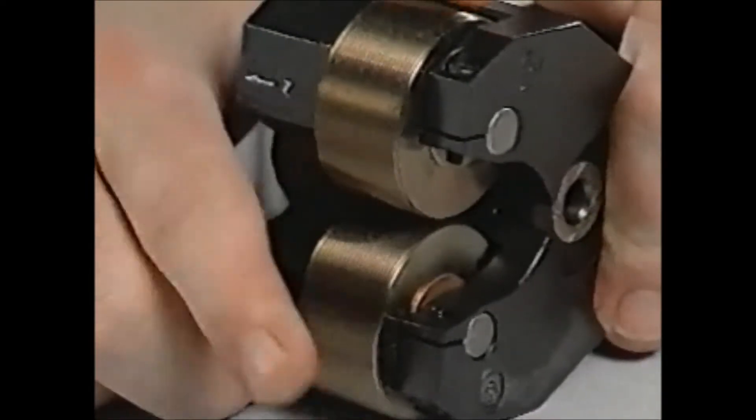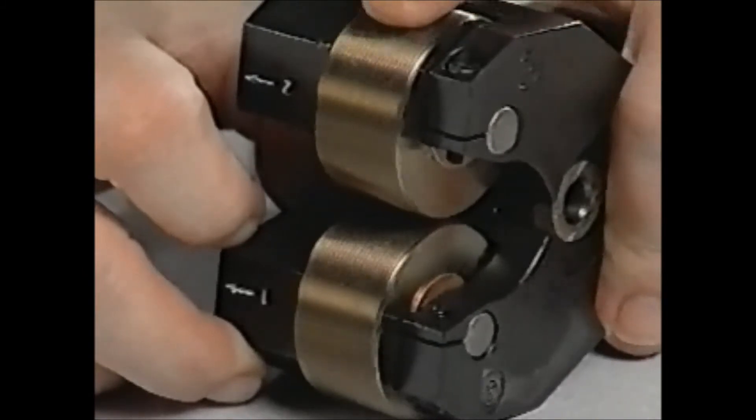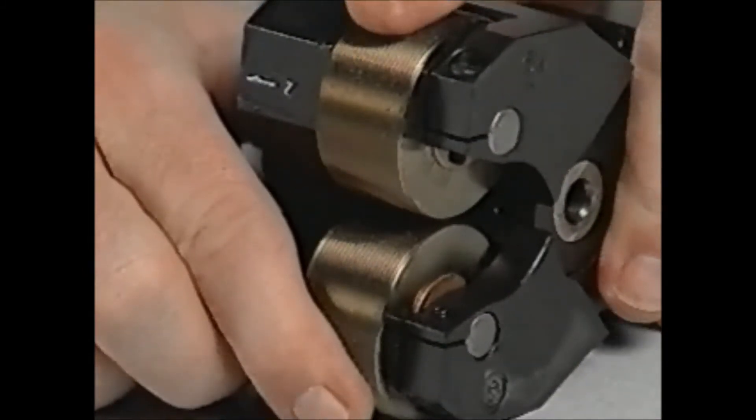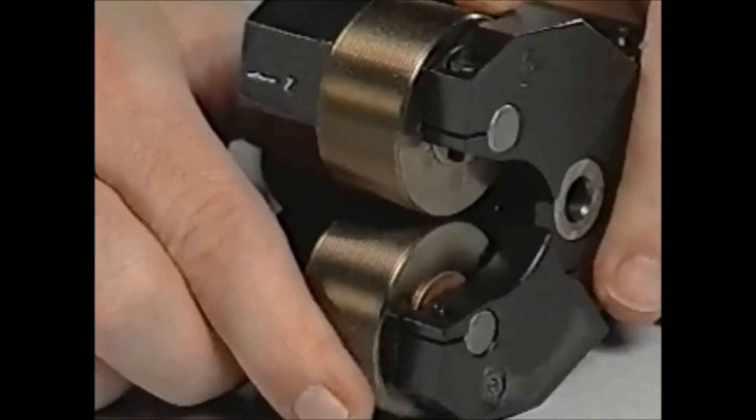And as a final check, make certain the rolls rotate freely and that when one roll is held and the other is rotated toward the inside, that it returns to its original position without binding.